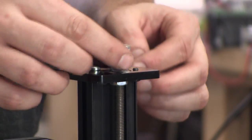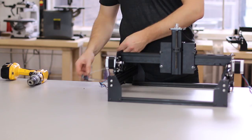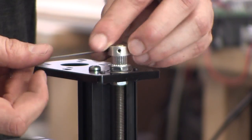Once the hex nuts are tightened, put the pulley back on the threaded rod, insert the set screws, and tighten them all the way down.